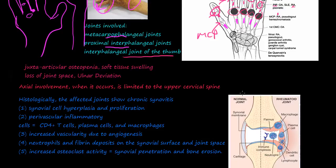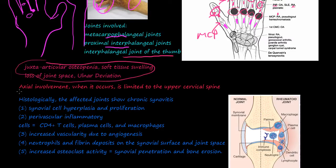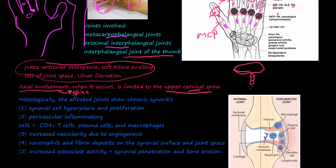Another thing we'll talk about is juxtaarticular osteopenia, soft tissue swelling, loss of joint space, and ulnar deviation — all things we can see on X-ray. If there is axial involvement, meaning the spine, it is limited to the upper cervical spine, so the top few cervical vertebrae, where you can get arthritic changes.